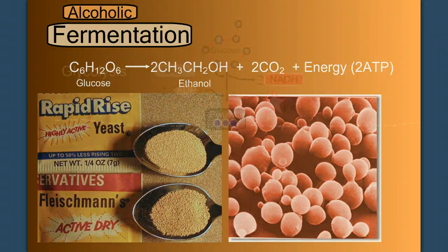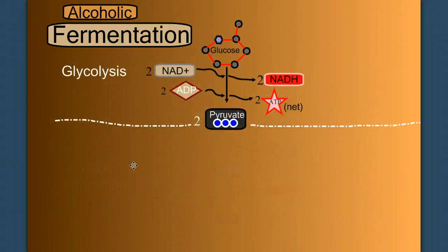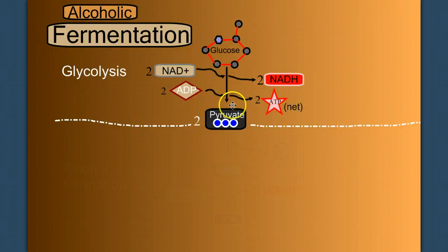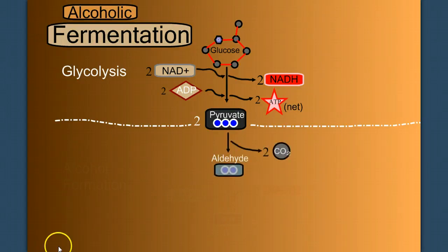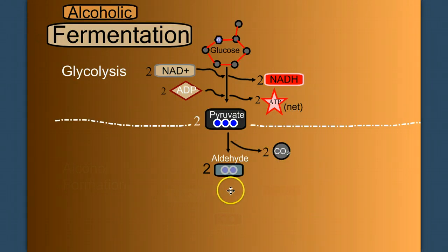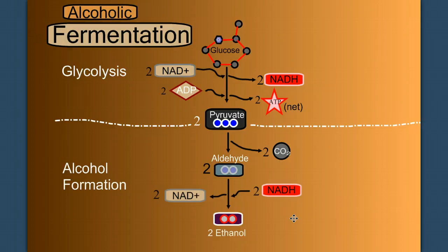Let's look at the metabolic pathway. We start with glycolysis — this is step one of all fermentation reactions. I've condensed glycolysis here in this diagram from glucose, skipping all the way to pyruvate. We see our two NADH being produced and a net profit of 2 ATP. In the second stage of fermentation, if it's alcoholic fermentation, the two pyruvates are converted into two molecules of aldehyde, and in doing so we release two carbon dioxide. Then the two aldehydes are converted into ethanol by the oxidation of NADH to NAD+. We call this second stage alcohol formation.